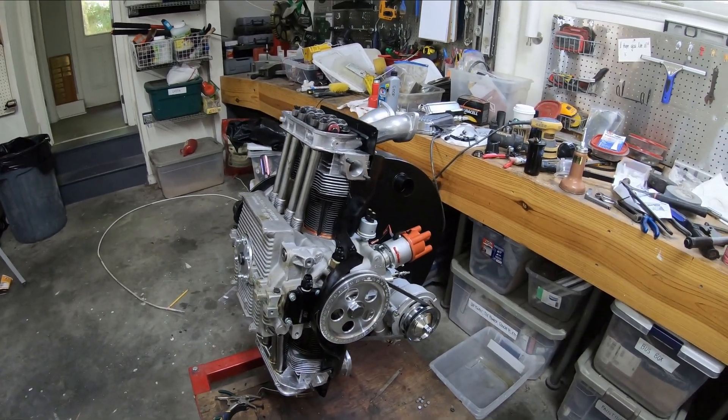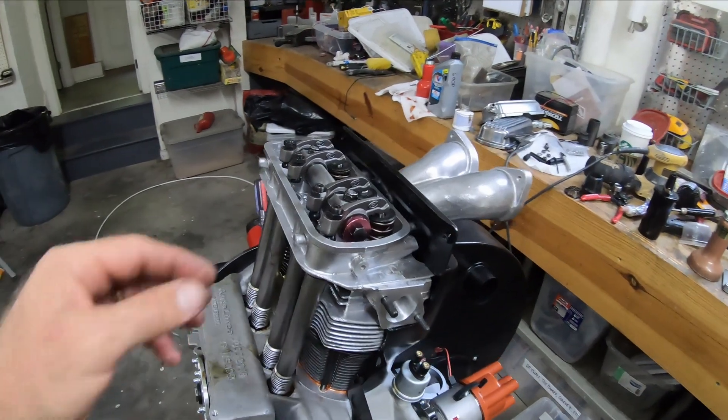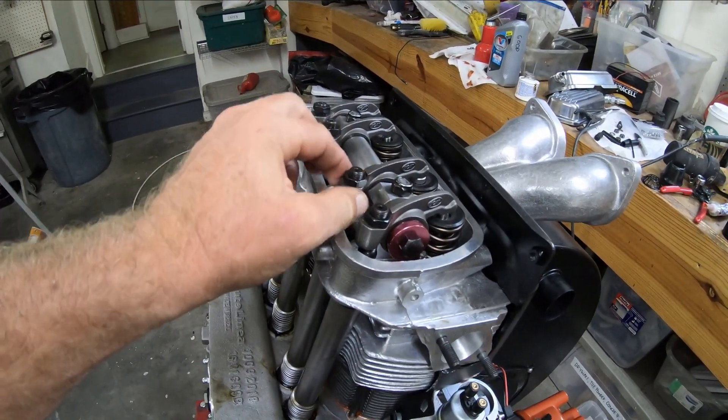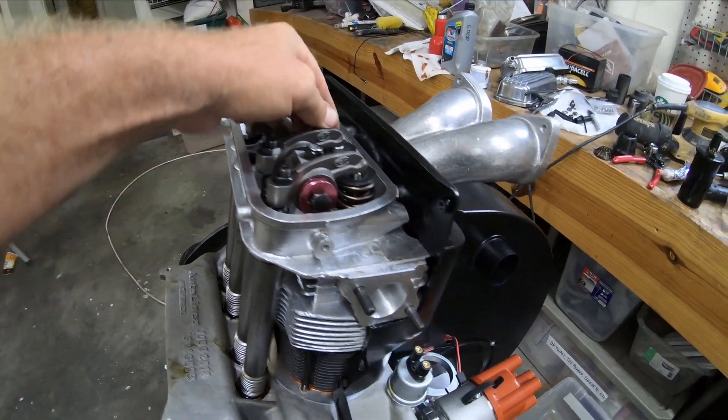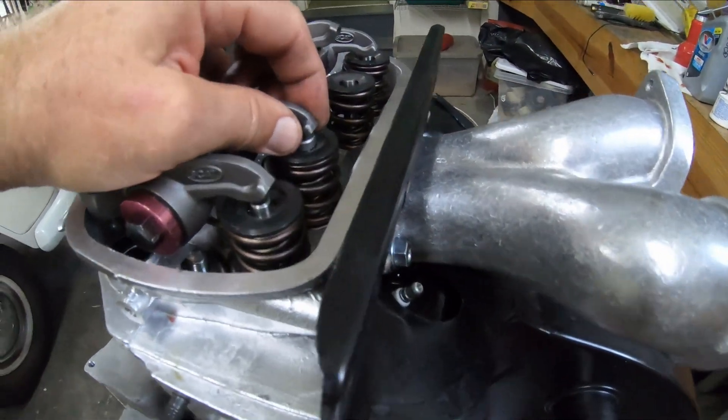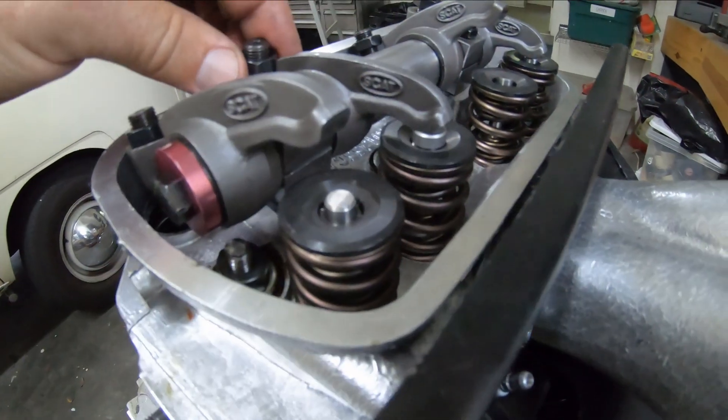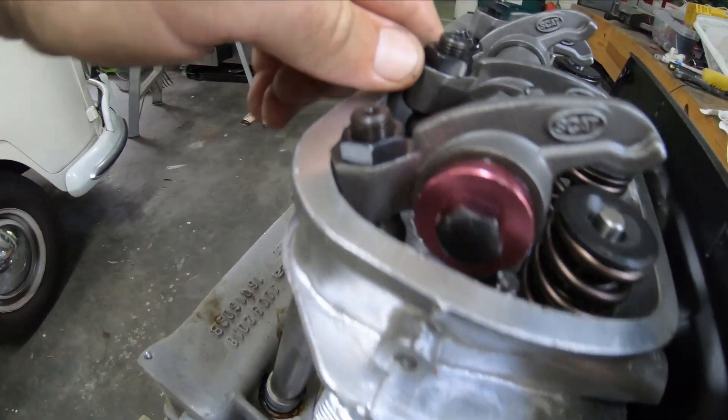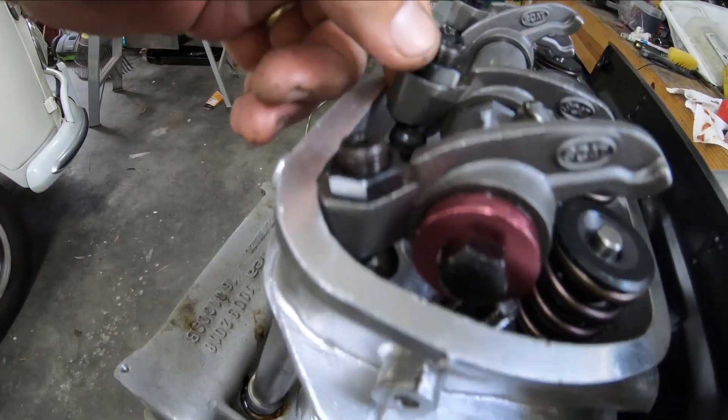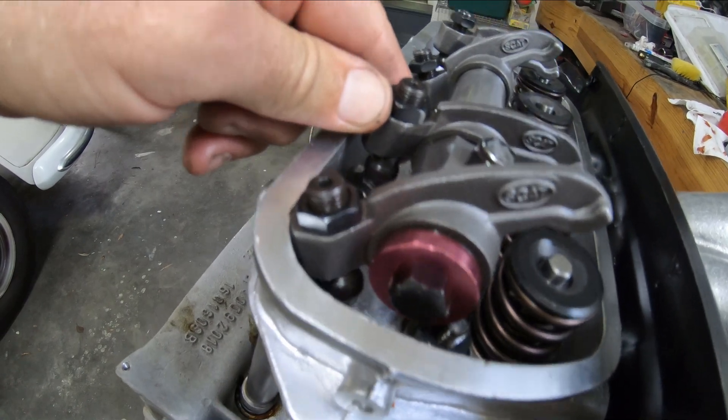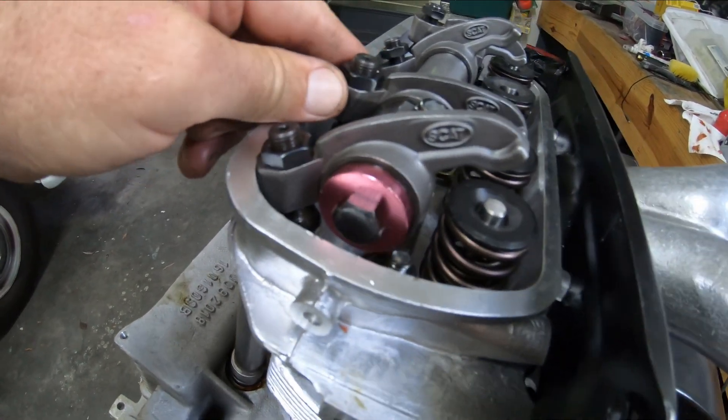I have this engine set up here with 1.4 rocker arms installed. I put on one lash cap, and then I put in my push rod measuring tool and set it to be a certain length. Then I rotated the engine over to see how it worked.